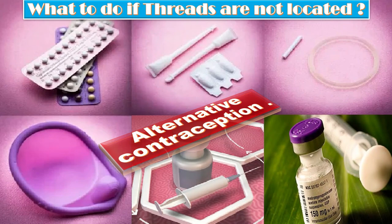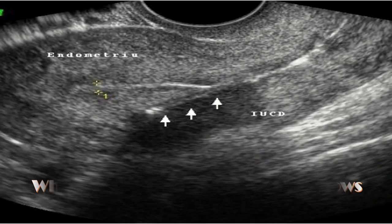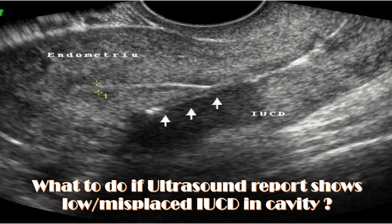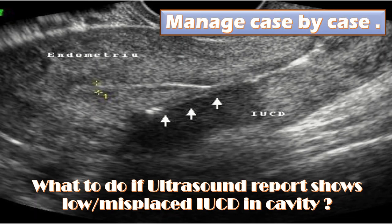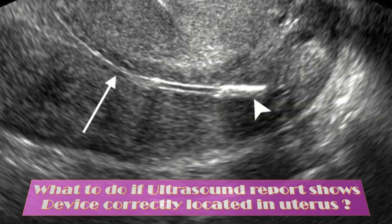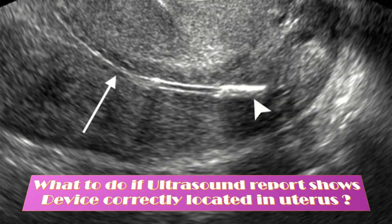What to do if threads are not located? Recommend alternative contraception until an ultrasound scan is performed. What to do if the ultrasound scan report shows a low or misplaced IUCD in the cavity? Manage case by case depending upon the symptoms and degree of displacement of the IUCD.